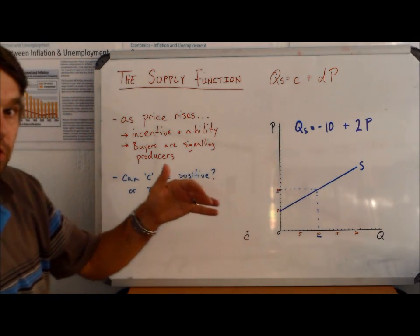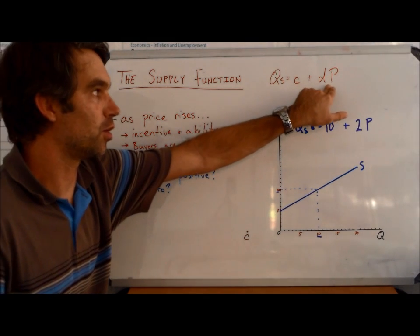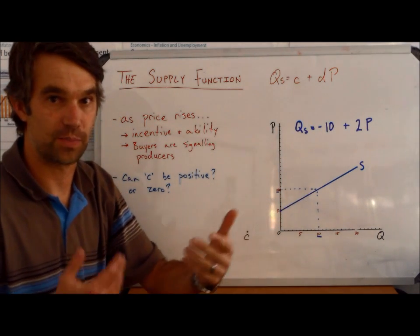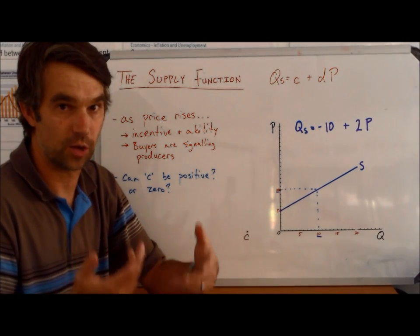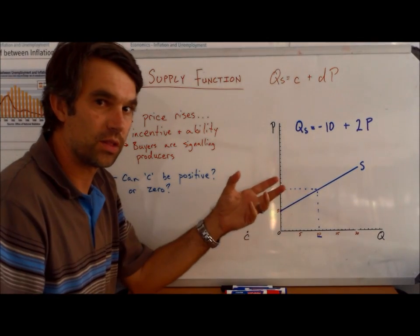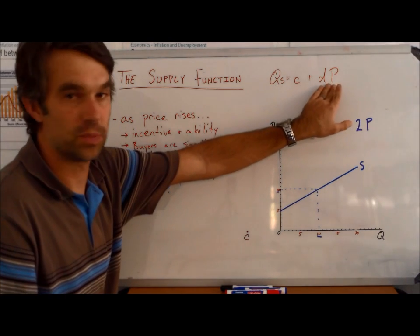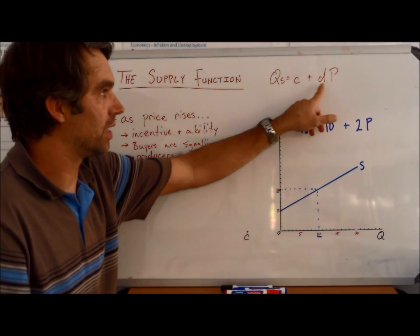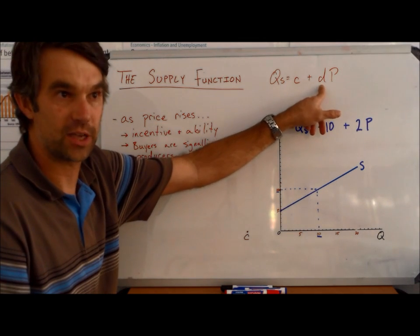one other big difference you'll notice is that the supply function does have a positive slope to price. And again, that reflects the positive relationship that exists between price and quantity supplied. When we look at the function, what we're seeing is that quantity supplied has some relationship to price. It starts from a certain point, and then based on what happens to price, it changes in a positive fashion.